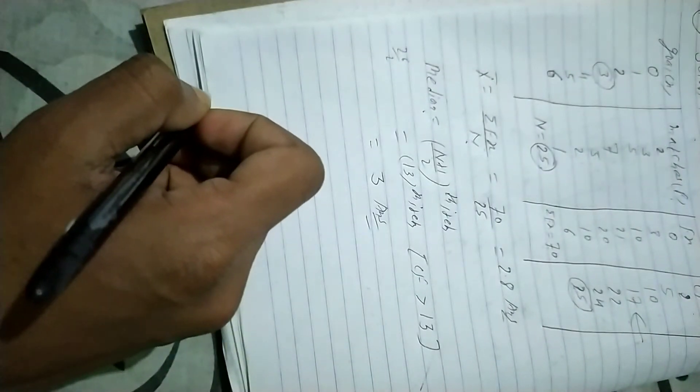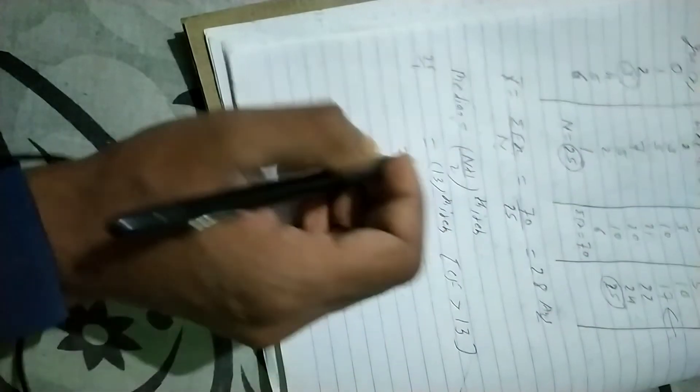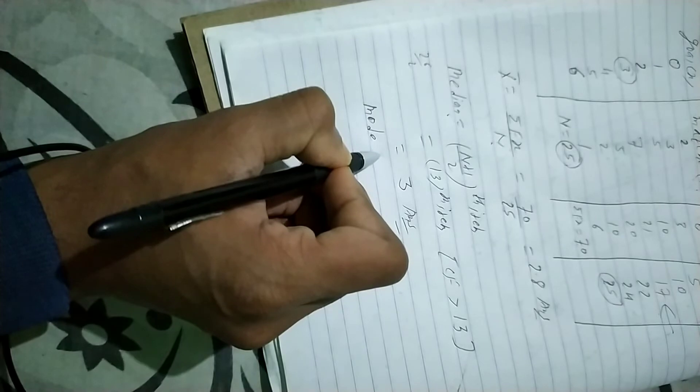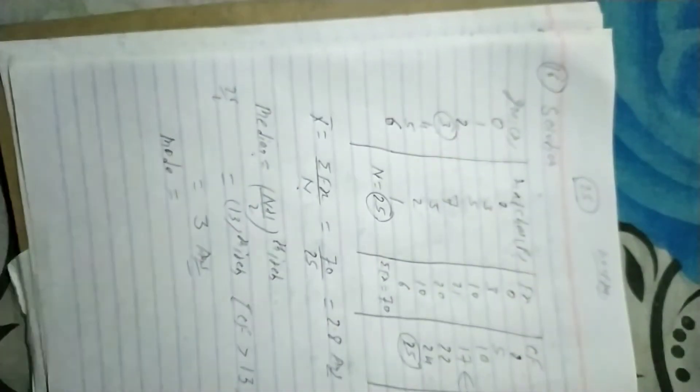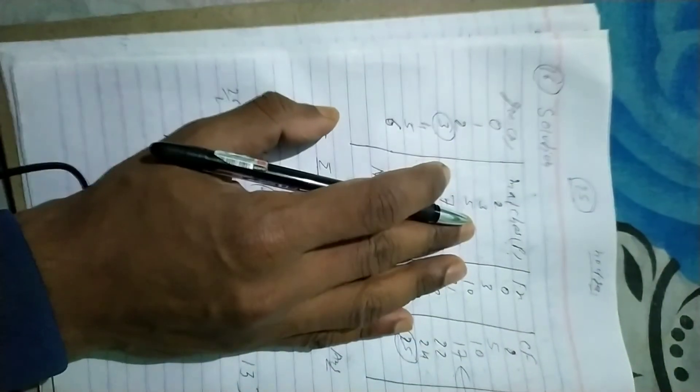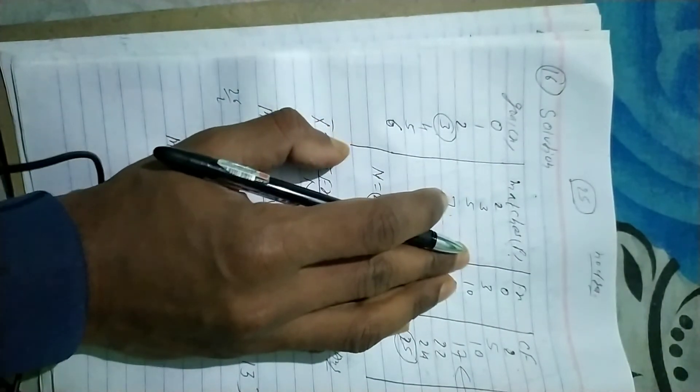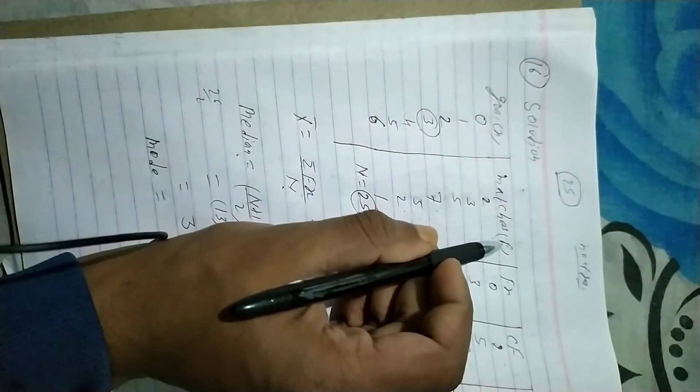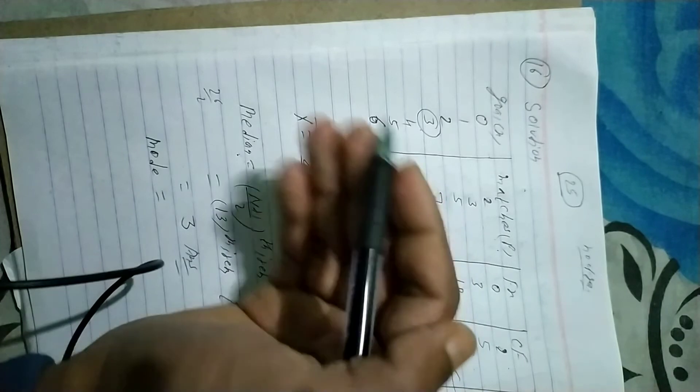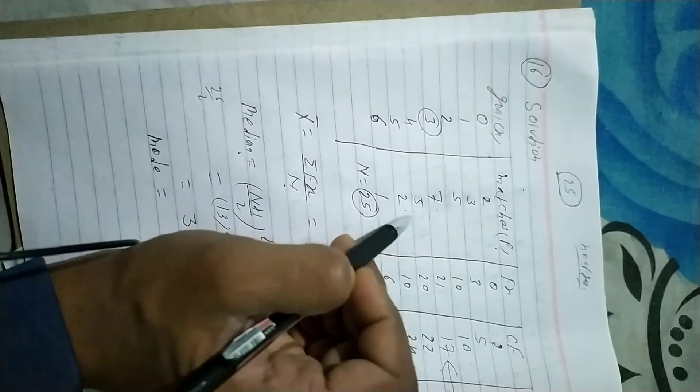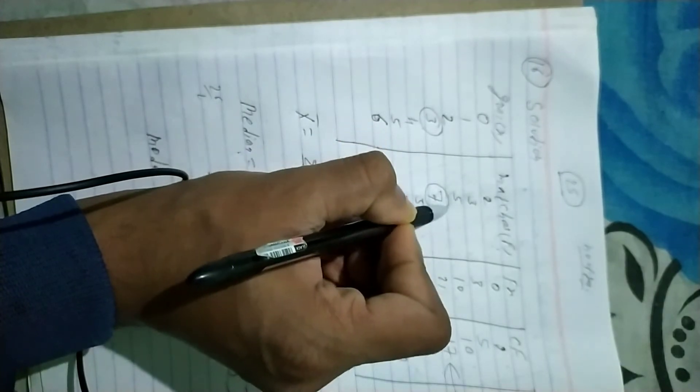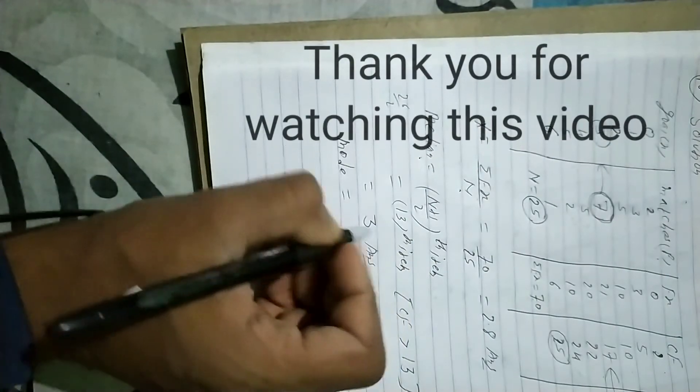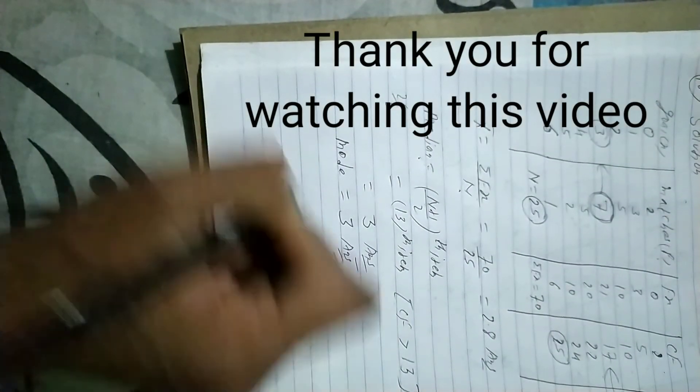To find the mode for discrete series, we look at the frequencies: 2, 3, 5, 7, 5, 2, 1. The highest frequency is 7, so the mode becomes 3.